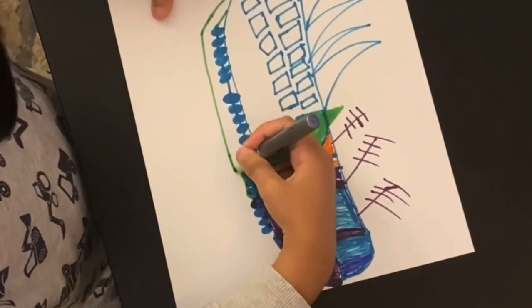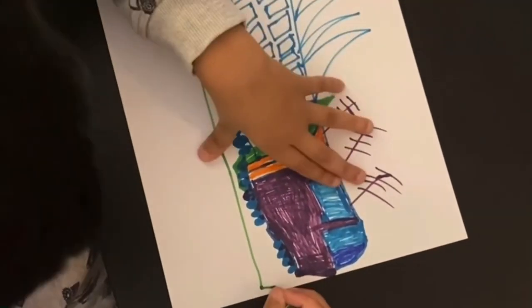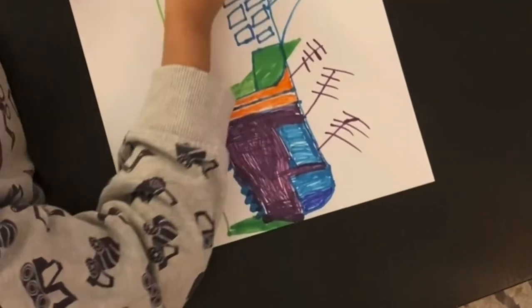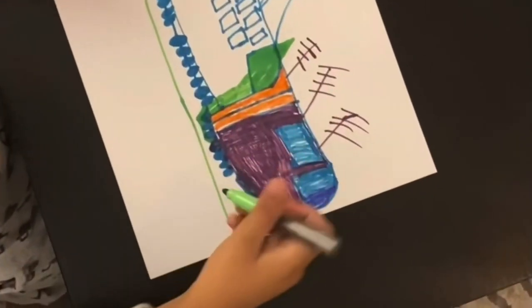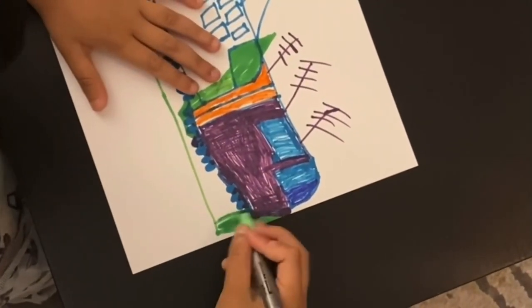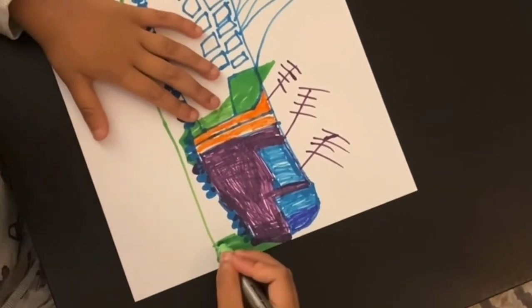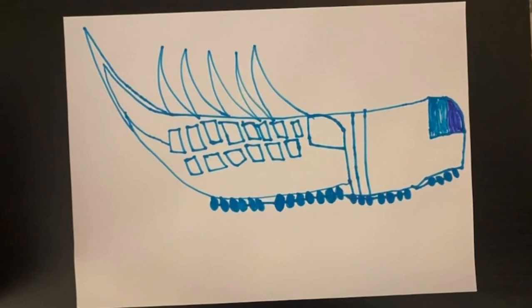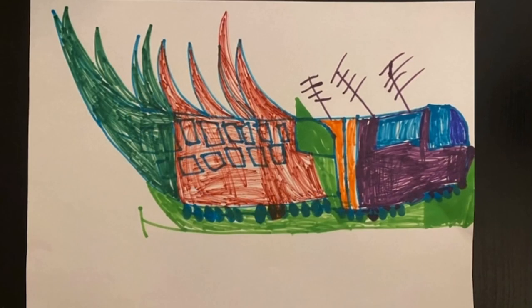He suddenly changed his mind and decided that the train can also become a boat, so there is a propeller and the boat is in green. This dinosaur train can be a multi-faceted vehicle. You can see the final product.